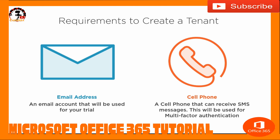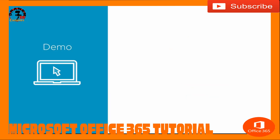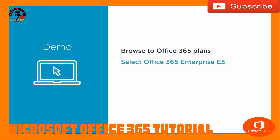We know what we have to do here — it's going to be a very short one. What we're going to do right now is jump into the demo and go over a couple things. We're going to browse over to the Office 365 plans so you can see them, select the Office 365 Enterprise E5 plan for our free trial, and then begin setting up the tenant. We're going to go through only part way — we'll stop when it starts asking about DNS records, tenant names, and region, and talk about each of those pieces.